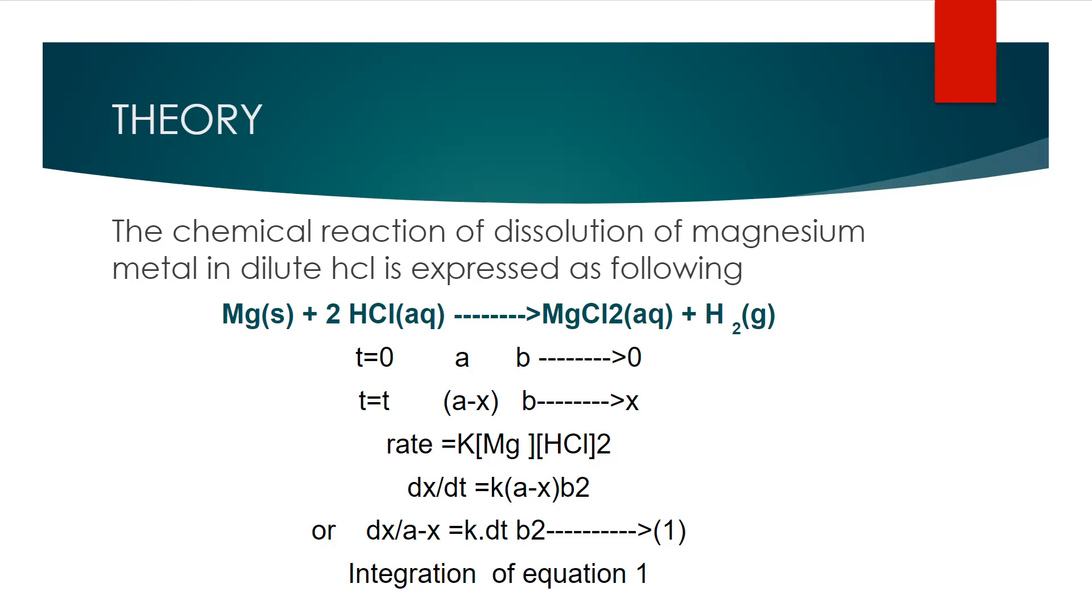There is a formula which is rate equals K[Mg] multiplied by [HCl]². Now by putting the value of magnesium and hydrochloric acid in this formula we will find an equation which is dx/dt equals K[Mg] multiplied by b².